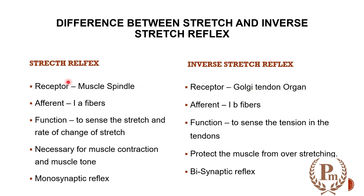For afferent fibers, stretch reflex uses 1A fibers; inverse stretch reflex uses 1B fibers. The muscle spindles in stretch reflex are involved in maintenance of muscle tone and can sense stretch and rate of change of stretch. The Golgi tendon organs in inverse stretch reflex sense tension in the tendons and protect the muscle from over-stretching. Stretch reflex is a monosynaptic reflex since 1A fibers go directly onto the alpha motor neuron.